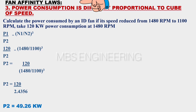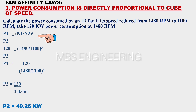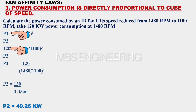Next, we learn the third affinity law and simple calculations. The third affinity law for fans: power consumption is directly proportional to the cube of speed. Calculate the power consumed by an ID fan if its speed is reduced from 1480 RPM to 1100 RPM, taking 120 kilowatts of power consumption at 1480 RPM. The power consumption P1 divided by P2 is directly proportional to the cube of speed N1 divided by N2, where P1 and P2 are power consumption in kilowatts. The given data: power consumption P1 is 120 kilowatts.